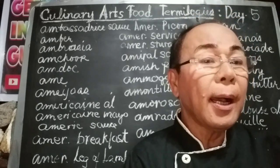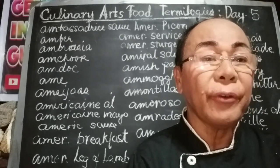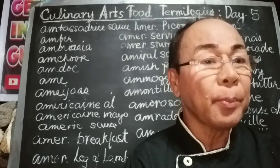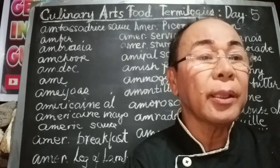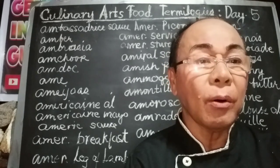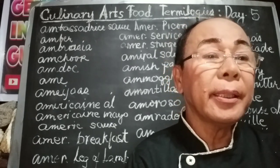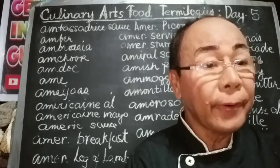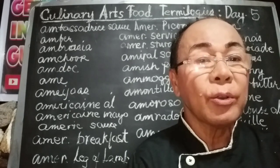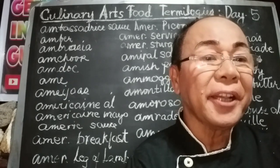The term Américaine refers to a French dish, especially lobster, prepared with a spicy tomato sauce, olive oil, onion, brandy, and wine. It also refers to a French garnish for fish consisting of thin slices of lobster tail and American sauce.